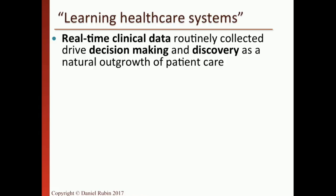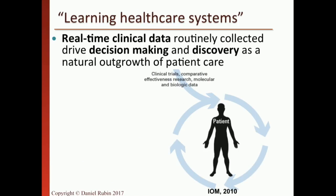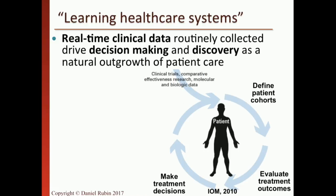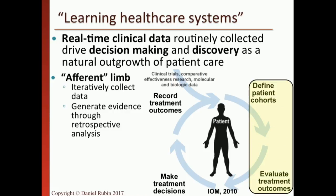The learning healthcare system paradigm works like this: I'm a patient with certain characteristics — find other patients in the accumulated medical record who are like me, see what treatments they received and what their outcomes were, and leverage that to figure out the best treatment for me. The concept takes all electronic data from not just one institution but many institutions linked together. You define characteristics that pull back a cohort of similar patients, examine their treatments and outcomes, make a decision, and that new data goes back into the medical record — creating a virtuous cycle of improved decision making.